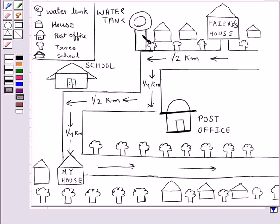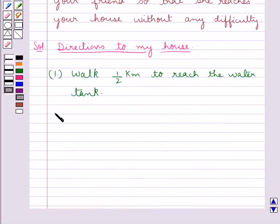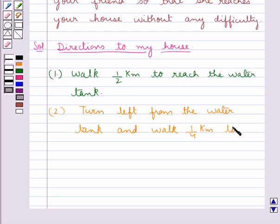On reaching the water tank, she would take a left turn and walk one-fourth kilometer to reach the post office. Our next step of direction is: turn left from the water tank and walk one-fourth kilometer to reach the post office.